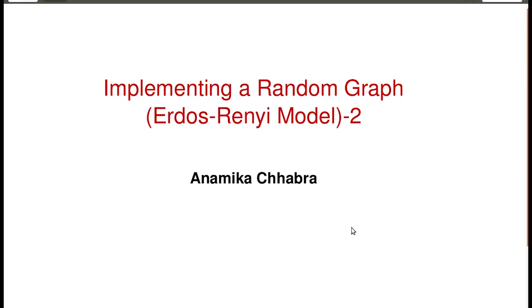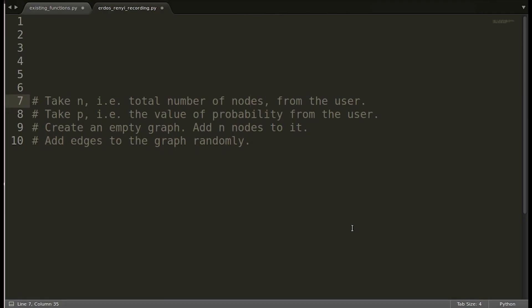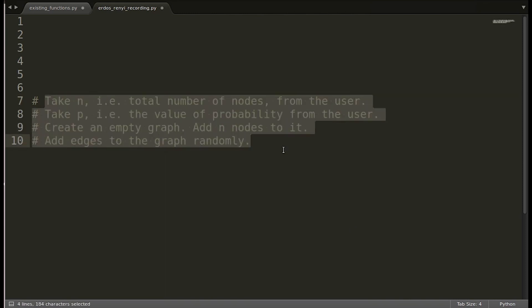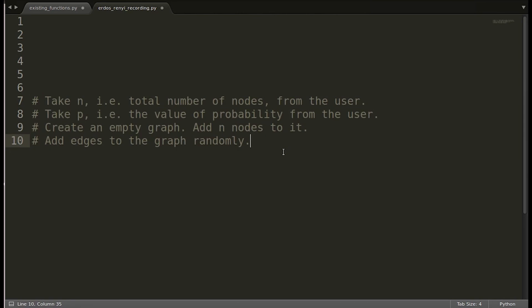In the previous video, we discussed the Erdős–Rényi model to create random networks. We also discussed the sequence of steps that we will be following for the implementation. In this video, we will do the implementation. I have pasted the sequence of steps that we discussed in the previous video here and we will start implementing them.